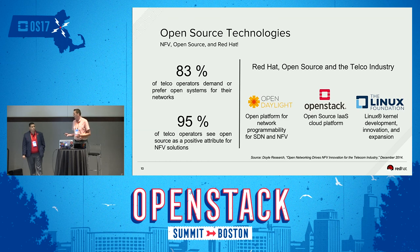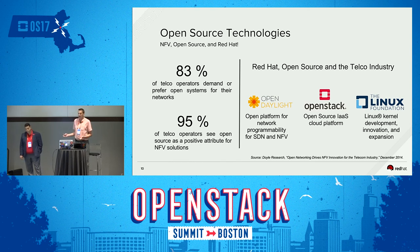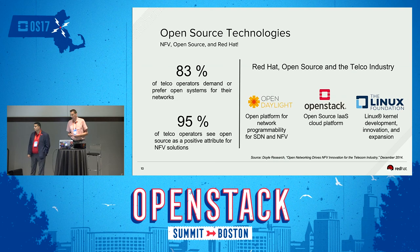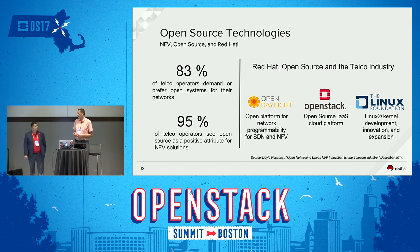Red Hat is very committed to open source. Basically all of our products have an upstream project that is funded. We started with Red Hat Enterprise Linux, which is the foundation for pretty much all innovation at Red Hat. We have the RDO project, which is the upstream project for our Red Hat OpenStack distribution. And most importantly, there's more innovation coming in the software-defined network space with OpenDaylight, which is becoming our open platform for network programmability and innovation in software-defined networking.